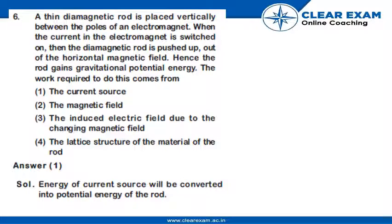Question 6 says a thin diamagnetic rod is placed vertically between the poles of an electromagnet. When the current in the electromagnet is switched on, the diamagnetic rod is pushed up out of the horizontal magnetic field. Hence the rod gains gravitational potential energy. The work required to do this comes from...